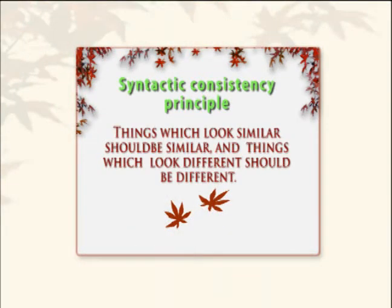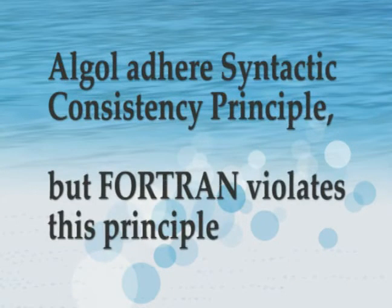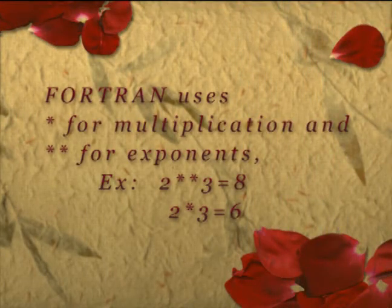The syntactic consistency principle states that things which look similar should be similar, and things which look different should be different. ALGOL adheres to this principle, but Fortran violates it — for example, Fortran uses a single asterisk for multiplication and double asterisk for exponentiation (e.g., 2**3=8, 2*3=6), and uses a single equals sign for assignment and double equals for equality.